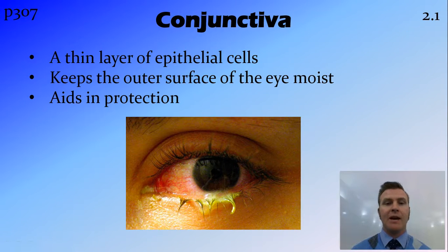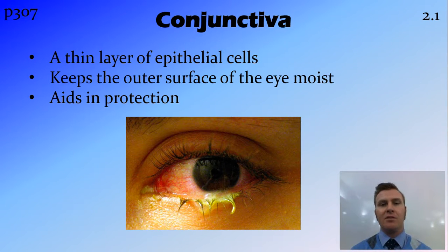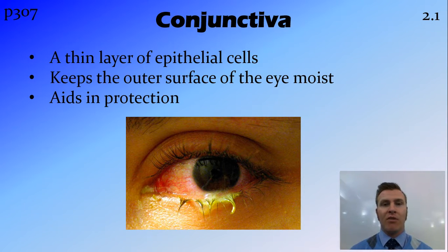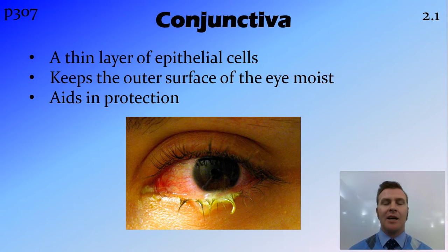The conjunctiva is a thin layer of cells found around the outside of the eye, and its job is to protect the eye as well as keep it moist. The conjunctiva doesn't look very good in a photo because it's just a clear layer of a few cells, but what I've got here is a picture of conjunctivitis, which is a bacterial infection of that conjunctiva layer.